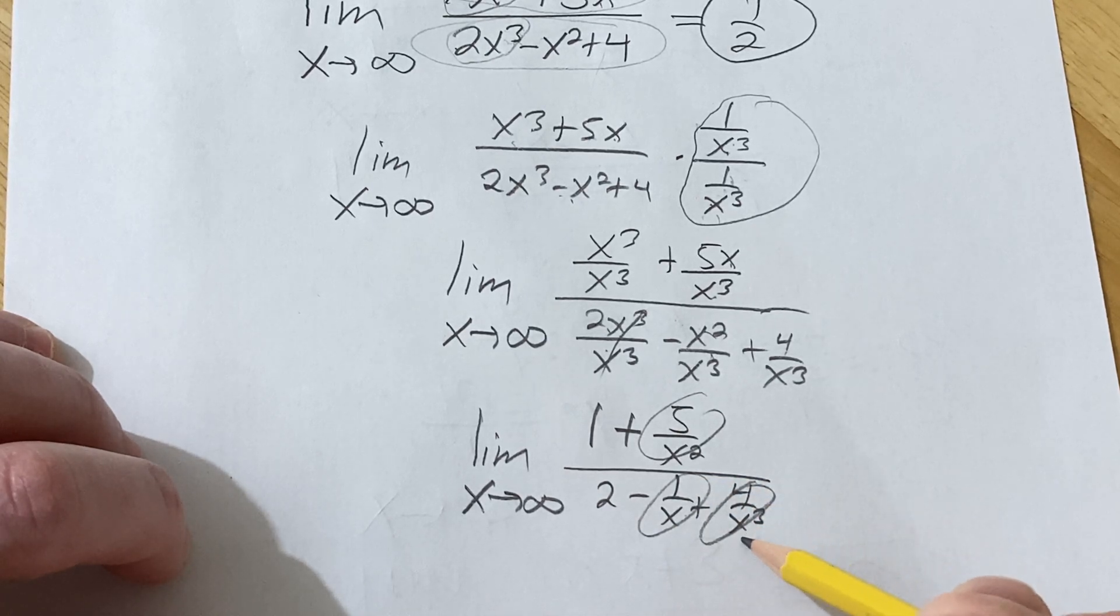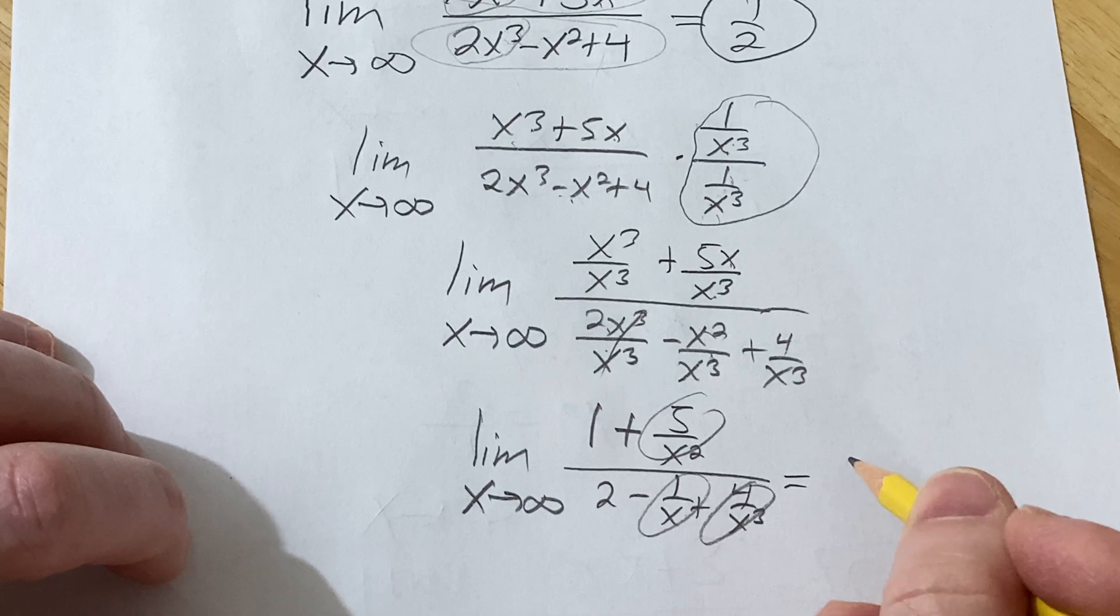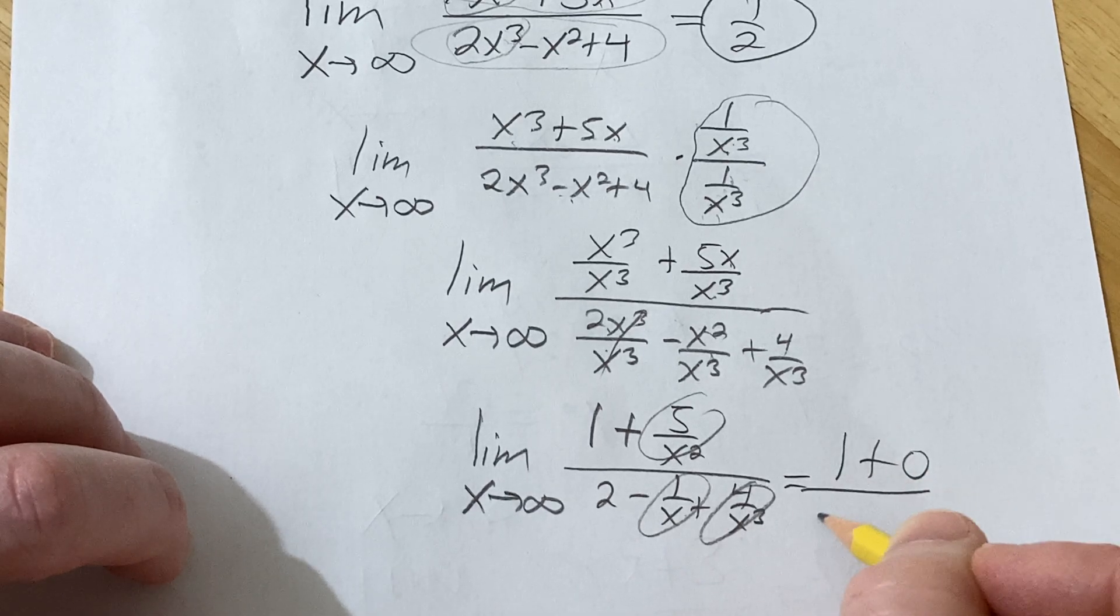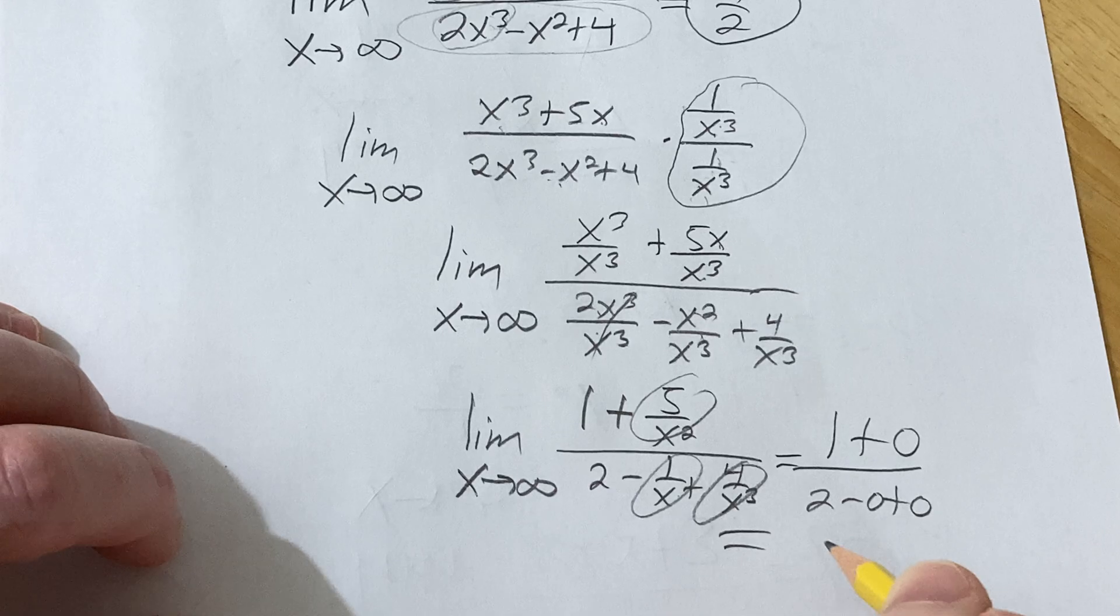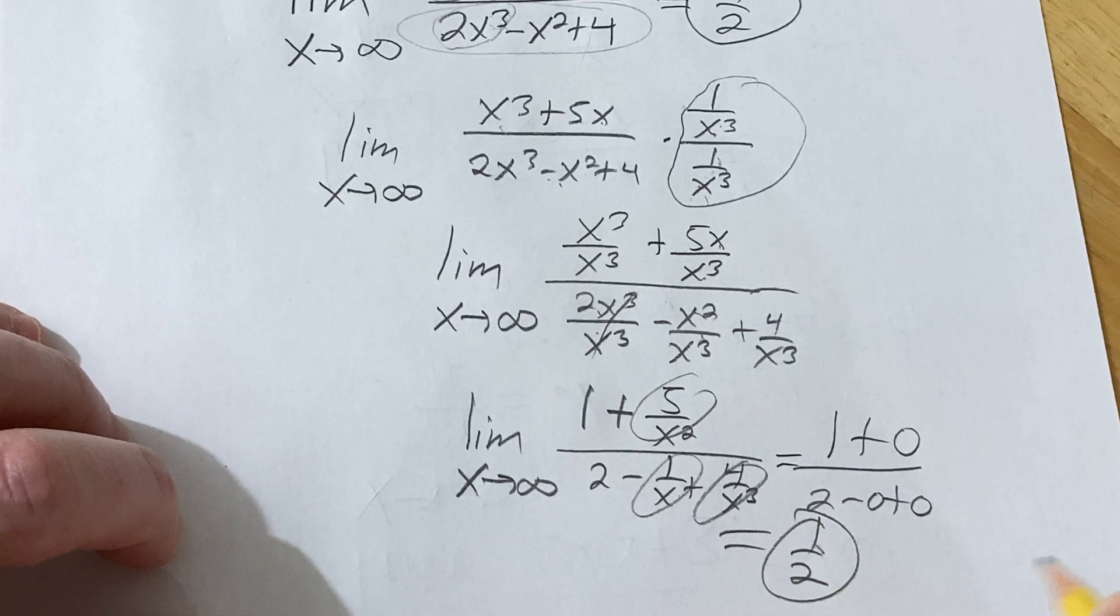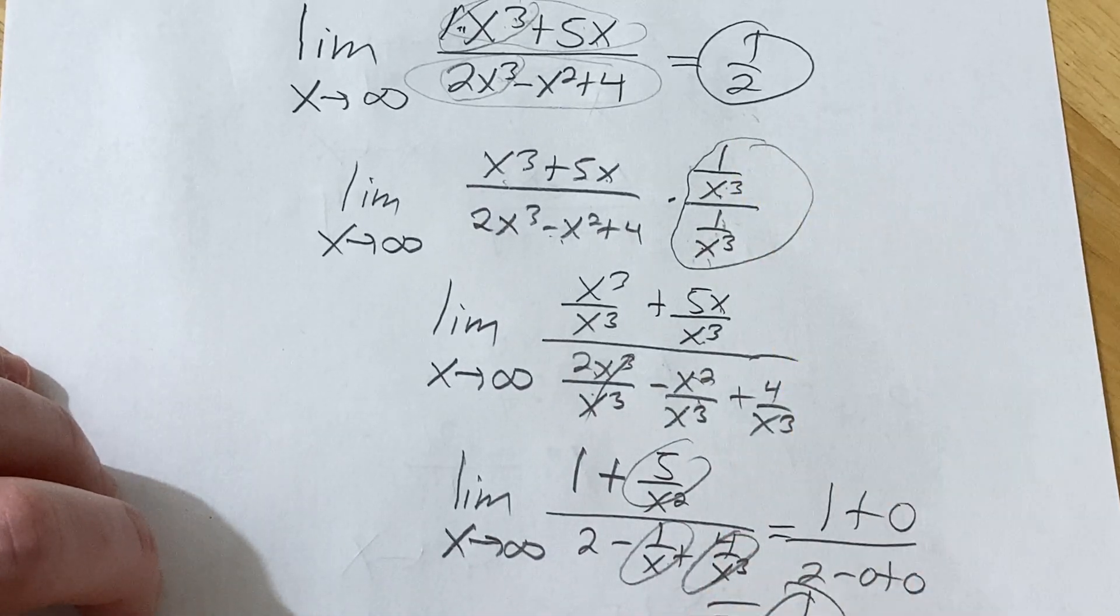So now it's a little more clear when x approaches infinity. This one, this one, and this one are going to approach 0 because it's a fraction and the bottom is getting really big. So we get 1 plus 0 over 2 minus 0 plus 0. So we end up with 1 over 2. So same answer we got when we just looked at it and wrote down the answer.